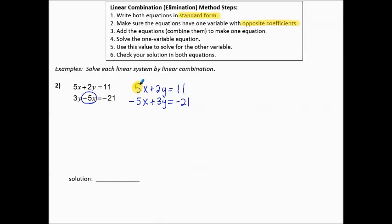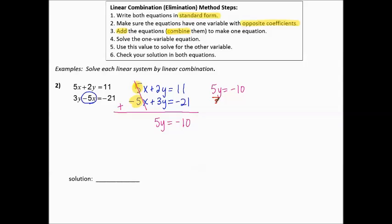Since we have opposite x coefficients, we can add the equations and make the x's go away — they'll be eliminated. Combining: no more x's; positive 2y and positive 3y make positive 5y; 11 and negative 21 combine to make negative 10. So 5y equals negative 10. Dividing both sides by 5, y equals negative 2. We have half of our solution — remember the solution is always an ordered pair, and the y coordinate is negative 2.